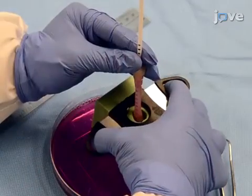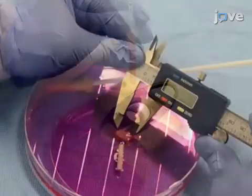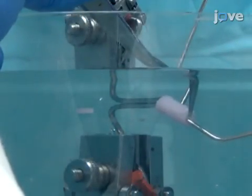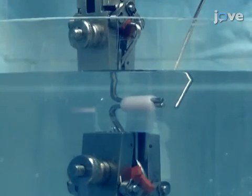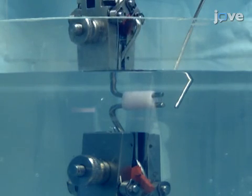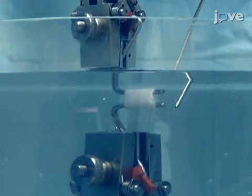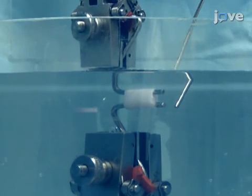To perform tests in the circumferential direction, first section the specimen into 10 millimeter long ring constructs. Then mount the rings onto stainless steel bars used in place of the grips. As with the longitudinal direction tests, first stretch the construct to its initial gauge length and hold it there for 10 minutes. Next, apply 30 cycles of 10 percent cyclic strain at a rate of 5 percent per second.